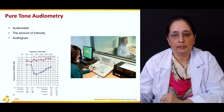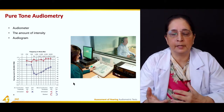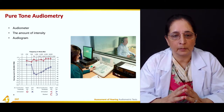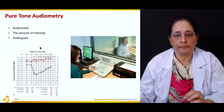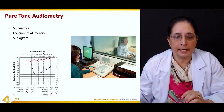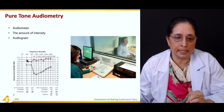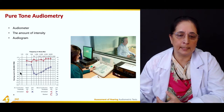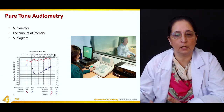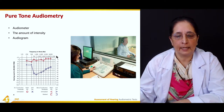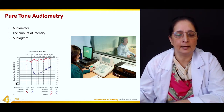The audiogram records different sounds when the patient indicates they can or cannot hear the sound. The audiogram has frequency in Hertz on one axis — ranging from 125 Hz to 8000 Hz — and hearing level in decibels on the other axis.